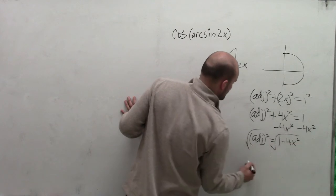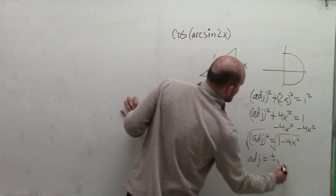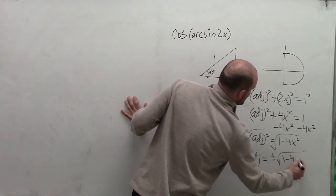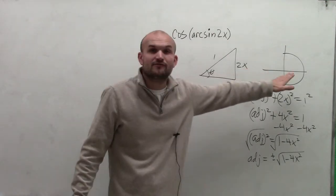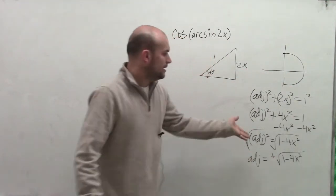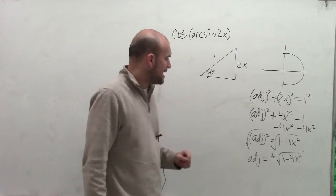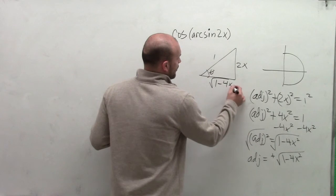Take the square root of both sides, and I can say my adjacent side equals plus or minus the square root of 1 minus 4x squared. Now we look at this triangle, and since our adjacent side is going to be in the first quadrant, we know that it's going to be positive and not negative. So therefore, I have my adjacent side is now the square root of 1 minus 4x squared.